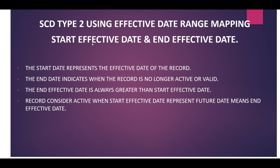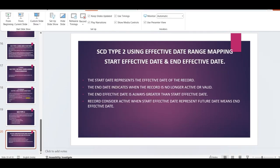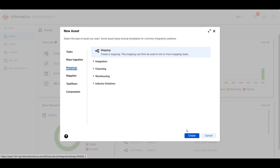The start effective date represents when the record became effective, and the end effective date represents when the record is no longer active. The end effective date is always greater than the start effective date. A record is considered active in SCD Type 2 when the end date represents a future date.